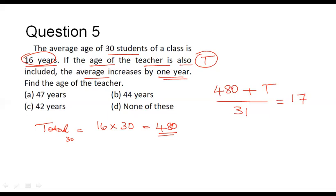This happens when the age of the teacher is also included. Also note the change here: 30 becomes 31 because age of one more person is getting included. Now by solving this we can see that 480 plus T is equal to 17 into 31, it is equal to 527.